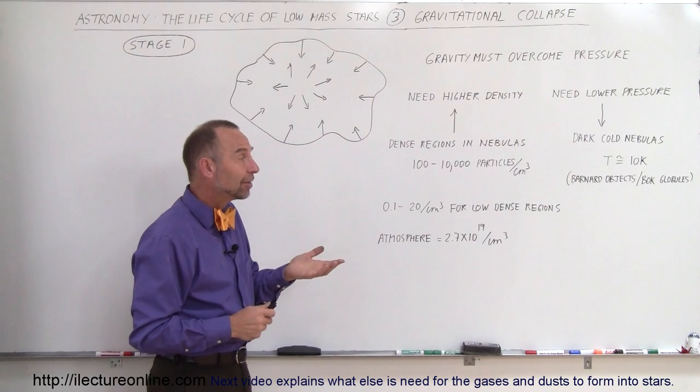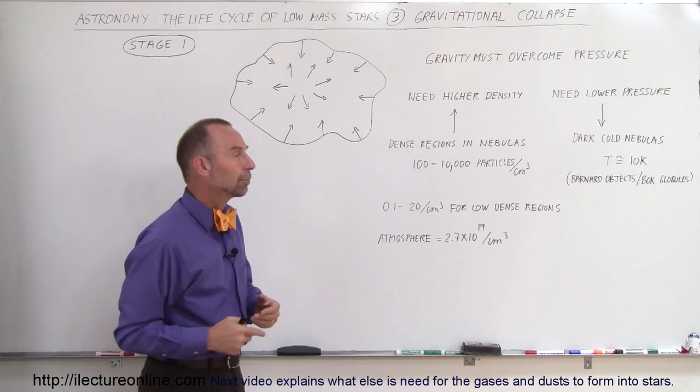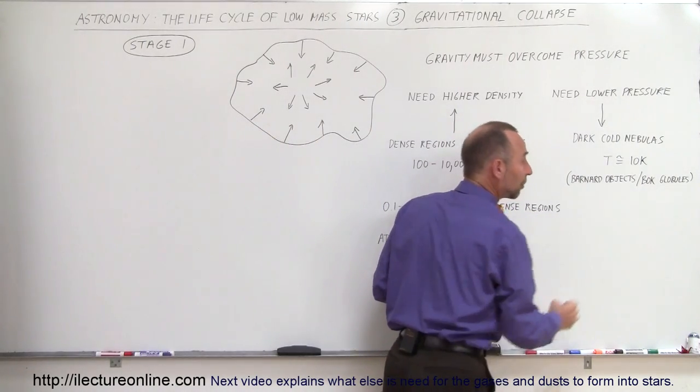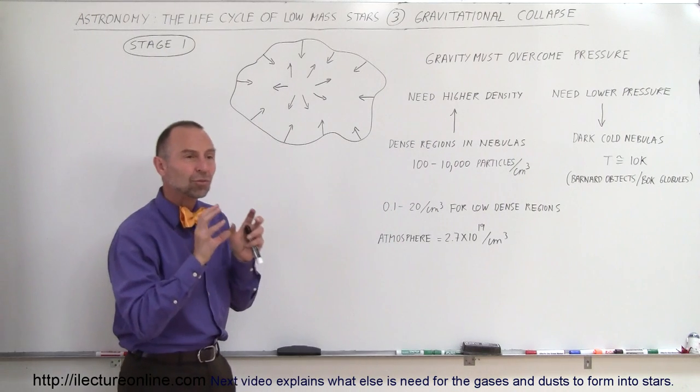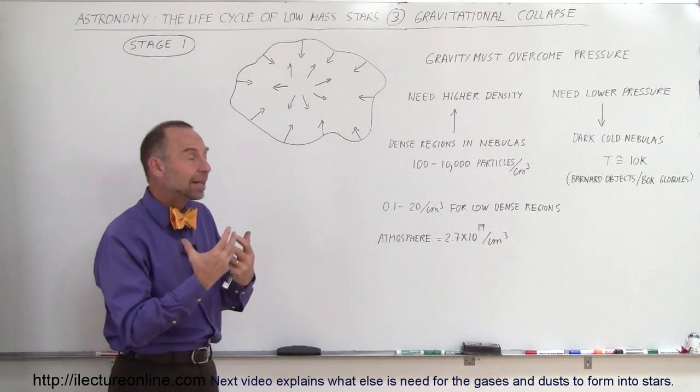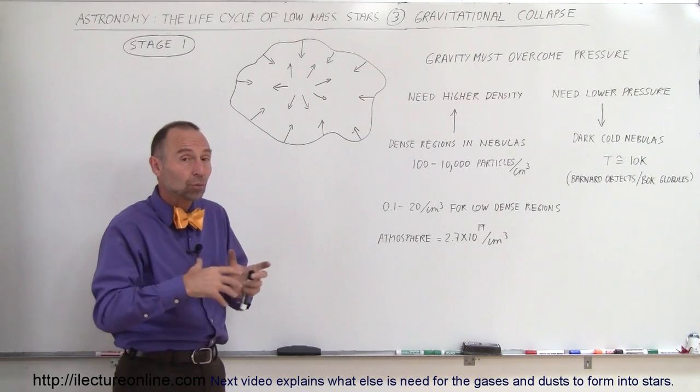And if that's the case, in those places pressure is so low that gravity may just overcome that pressure. There are places like that, we call them Barnard objects or Bok globules, which are very dense regions of dust and gas, very dense and very dark, no light emanating from them, very cold and very dark. And those are the potential places where stars can form.